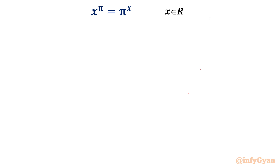If you look at the equation, you can identify one root clearly, that is x = π. But there is another solution. So we are trying to analyze this equation in such a way that you will understand exactly what is happening and why. So let us get started.